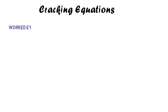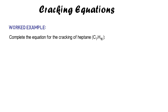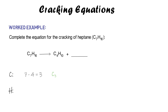Here's another worked example — this time completing an equation rather than just identifying a formula, but the process is exactly the same. Heptane, C7H16, splits into C4H10 and something else. Start with the carbons: seven to start, four used, so three left — giving C3. For hydrogens: 16 to start, 10 used, so six left — giving H6. The formula of the second product is C3H6, again a one-mark question.